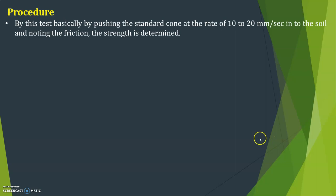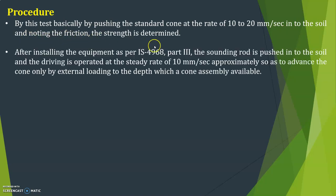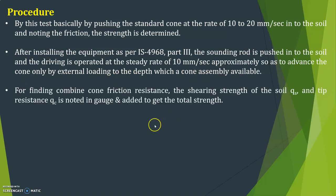To carry out this test, the standard cone is pushed at the rate of 10 to 20 mm per second into the soil and the friction is noted to determine the strength. After installing equipment as per IS-4968 Part 3, the sounding rod is pushed into the soil at a steady rate of approximately 10 mm per second. For finding combined cone friction resistance, the shear strength QS and tip resistance QC are noted on the gauge and added to get total strength.